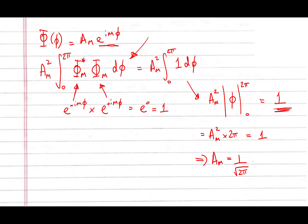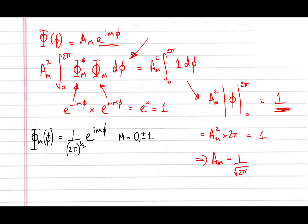Our final normalized solution, writing m as a quantum number, is: Φ_m(φ) = (1/√(2π)) · e^(imφ), where m = 0, ±1, ±2, ±3, and so on.